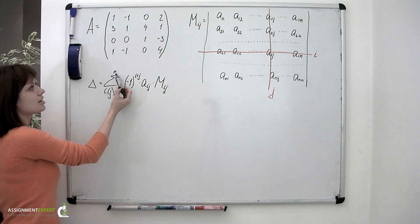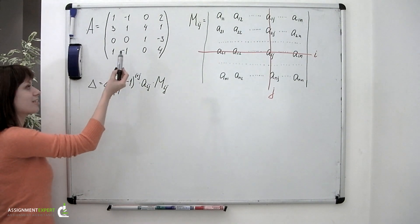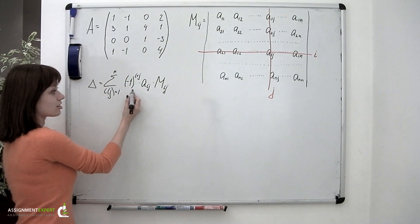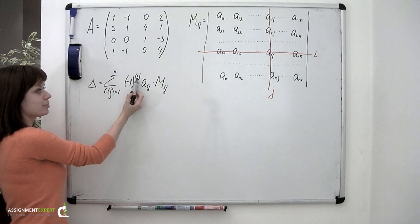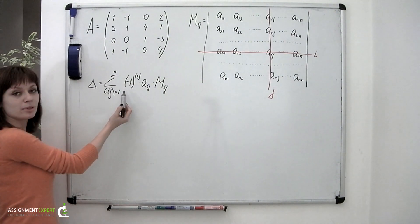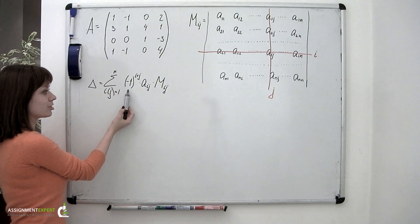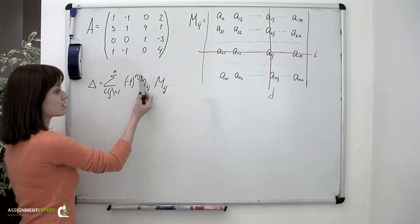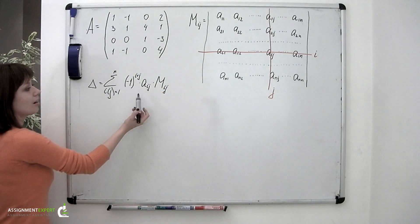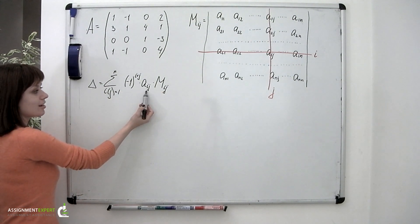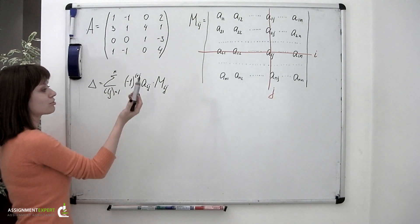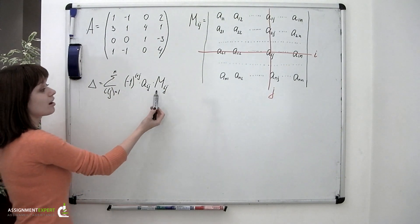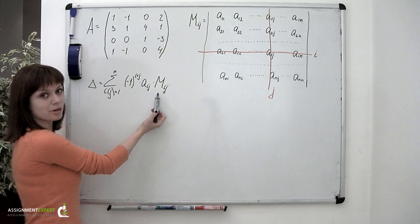n is the number of rows or columns in the given matrix. The first factor, negative 1 raised to the power of i plus j, can only have a value of positive or negative 1, so it only influences the sign in front of the term. a sub ij is the entry of the given matrix numbered ij, and m sub ij is the corresponding minor.